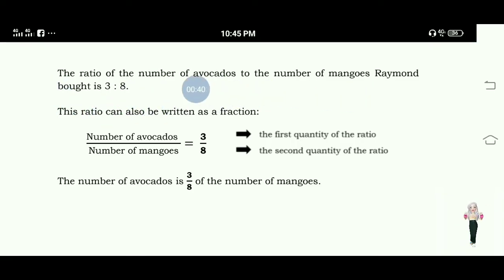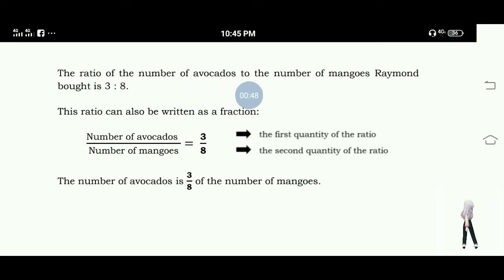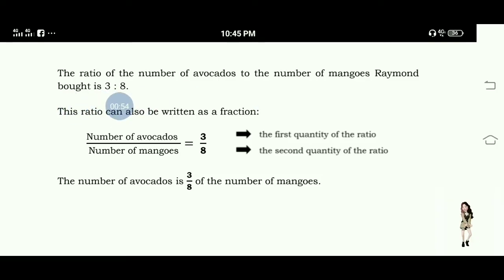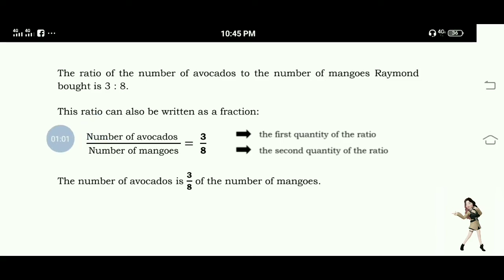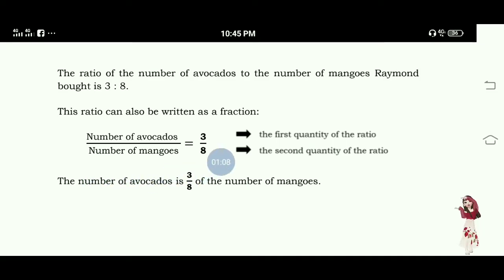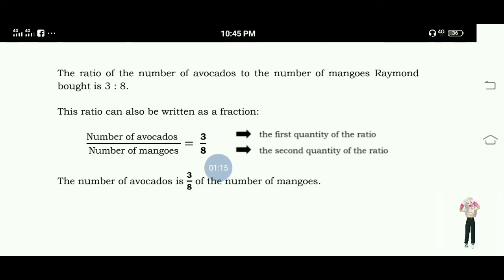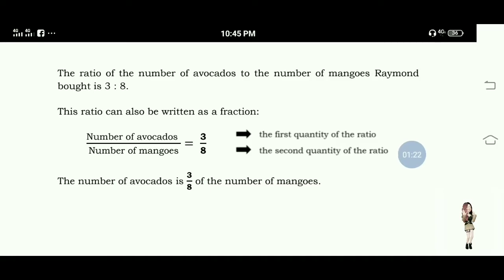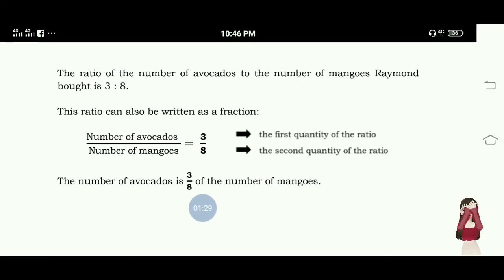As you can observe, it is being stated that the ratio of the number of avocados to the number of mangoes Raymond bought is three avocados is to eight mangoes. This ratio can also be written as a fraction — the numerator is the number of avocados and the denominator is the number of mangoes. So three-eighths, or three over eight. The first quantity of the ratio is the numerator, which is three, and the second quantity is the denominator, which is eight.